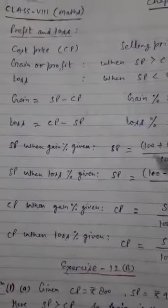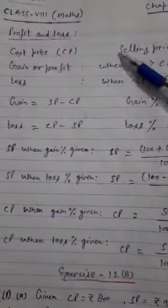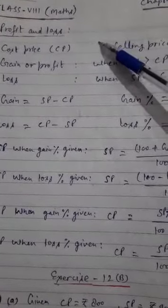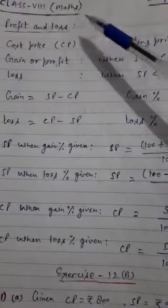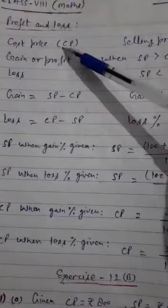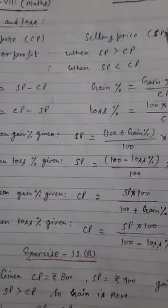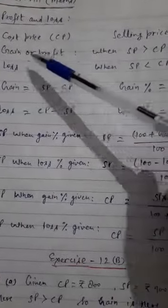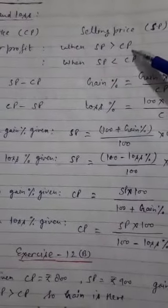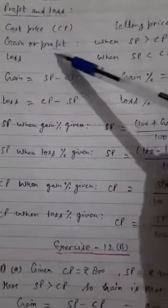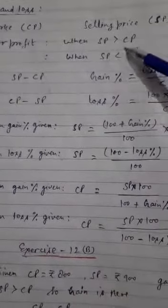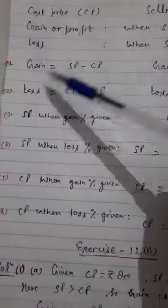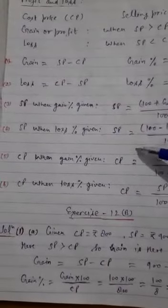Welcome Class 8th students. Today in Chapter number 12 Mathematics, the topic is Profit and Loss. There is a cost price and selling price, SP and CP. When selling price is greater than CP, there will be gain or profit. And when selling price is less than CP, there will be loss.